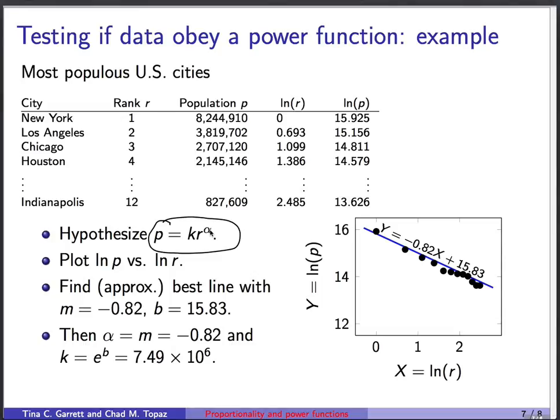If we wanted to find out, what we would do is form a new data set. We would take these rank numbers and we would take the natural log of all of them. And that gives us this column in the table. Then we take the population and we take the natural log of all the population values. That gives us this column in the table. Then we plot this column and this column. So natural log r on the horizontal axis, natural log p on the vertical axis. And we see this set of black points here.